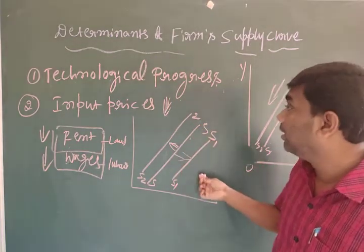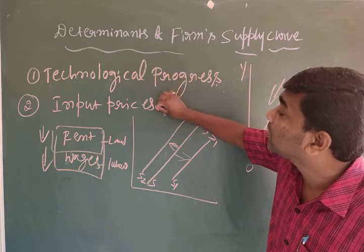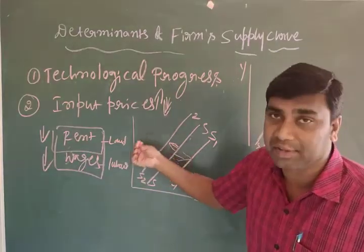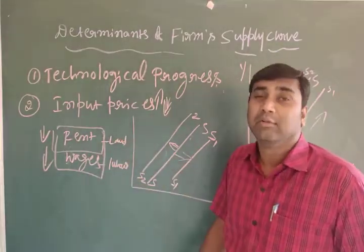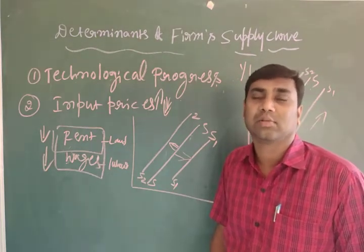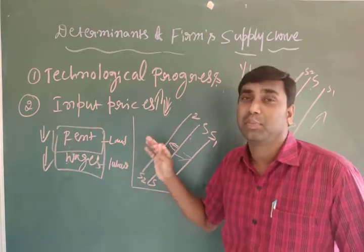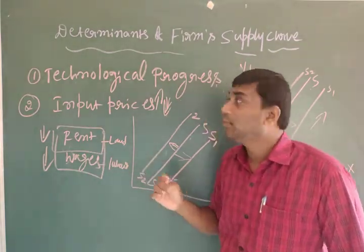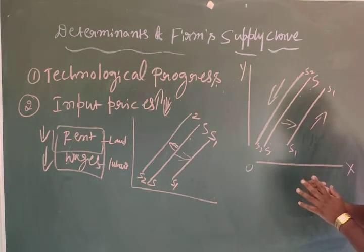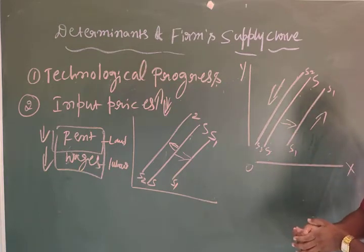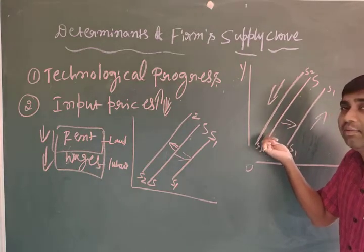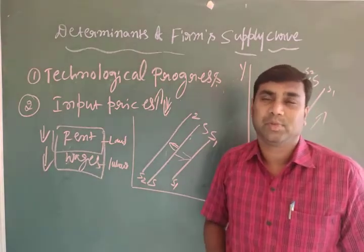When input prices are more, the supply curve will shift leftward because we must pay more — total cost and marginal cost both increase, and the producer will stop production, making supply less. When technology progress is good, the supply curve shifts rightward. When we use old technology, the supply curve shifts leftward.